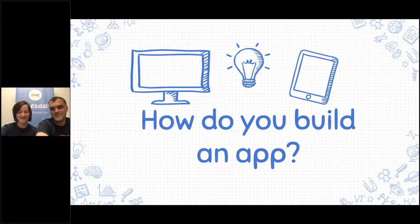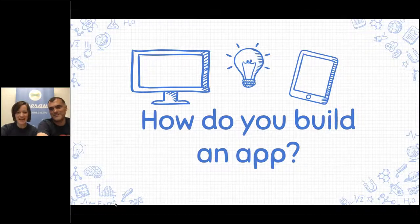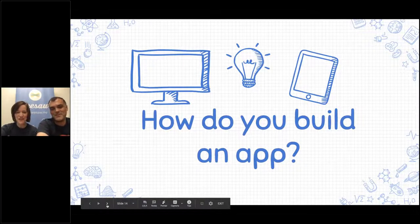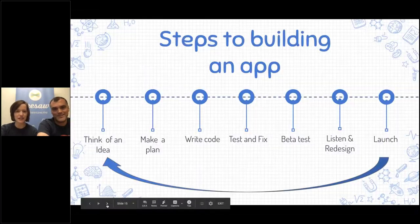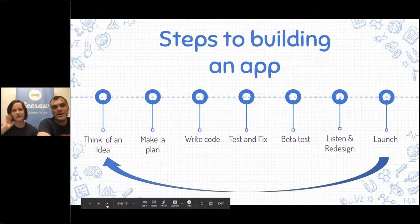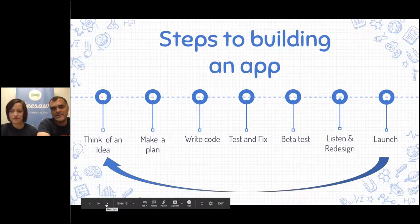We have friends joining from all over the country — Omaha Nebraska, El Paso, Springfield, California, and many more. Thanks so much for joining! So let's talk about these six steps for building an app: think of an idea, make a plan, write some code, test and fix, beta test, and then listen and redesign.